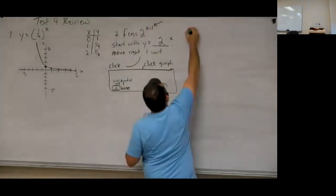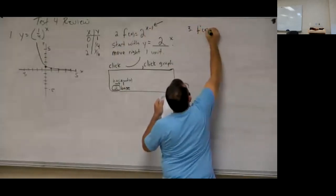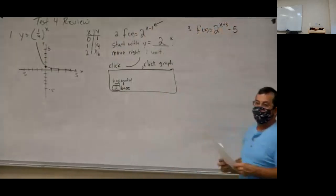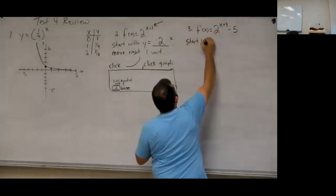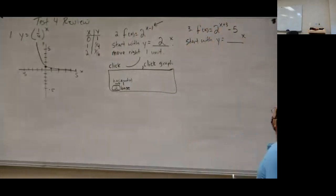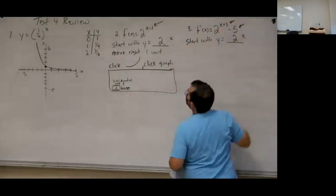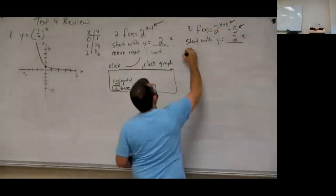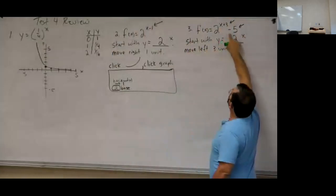Problem three is the same idea but with a couple more moves. They're giving us f(x) equals 2 to the x plus 3 minus 5, so this will have two moves. We start with y equals blank to the x — again the base is 2. The plus 3 in the exponent moves us left three units, and the negative 5 moves us down five units.